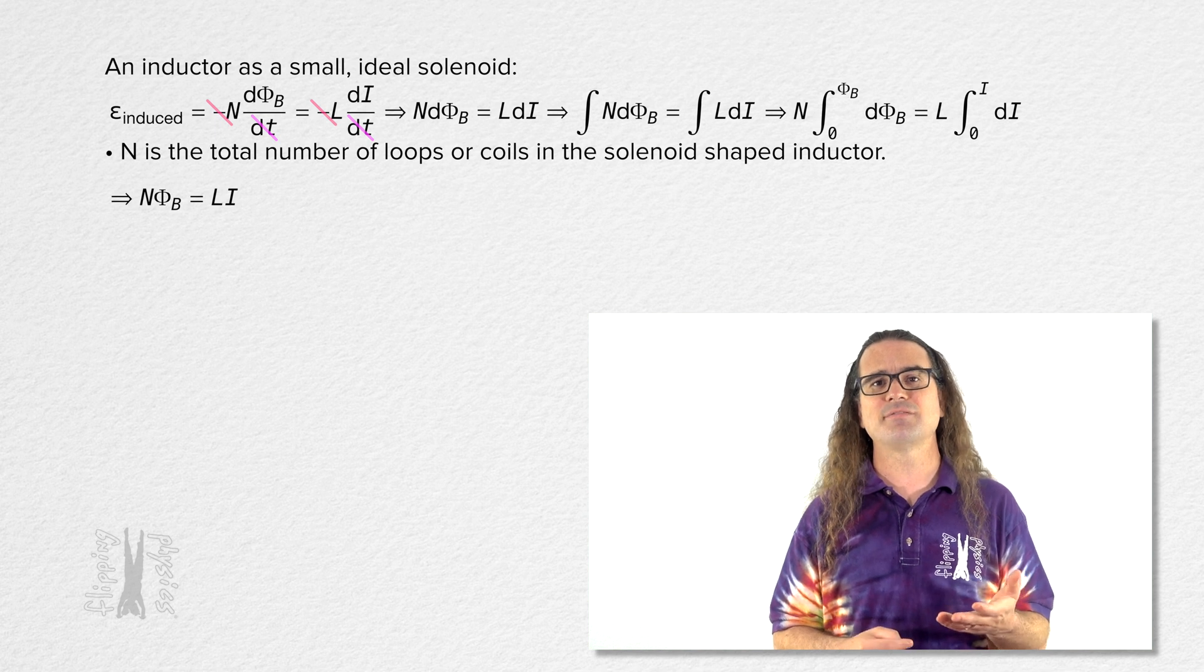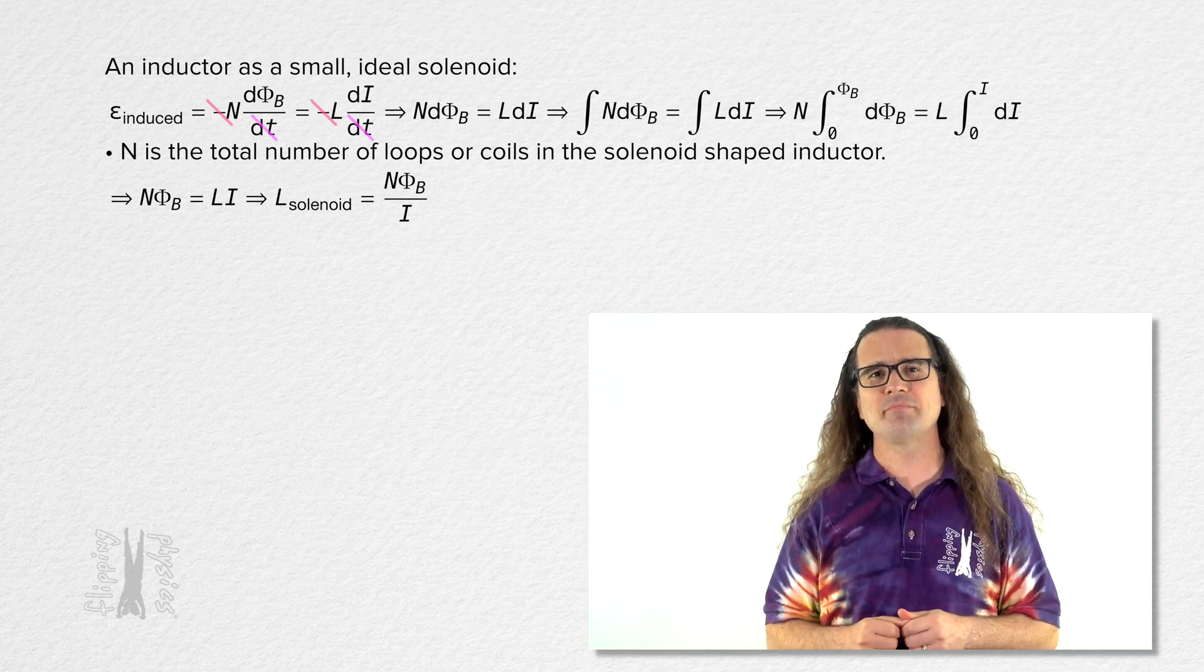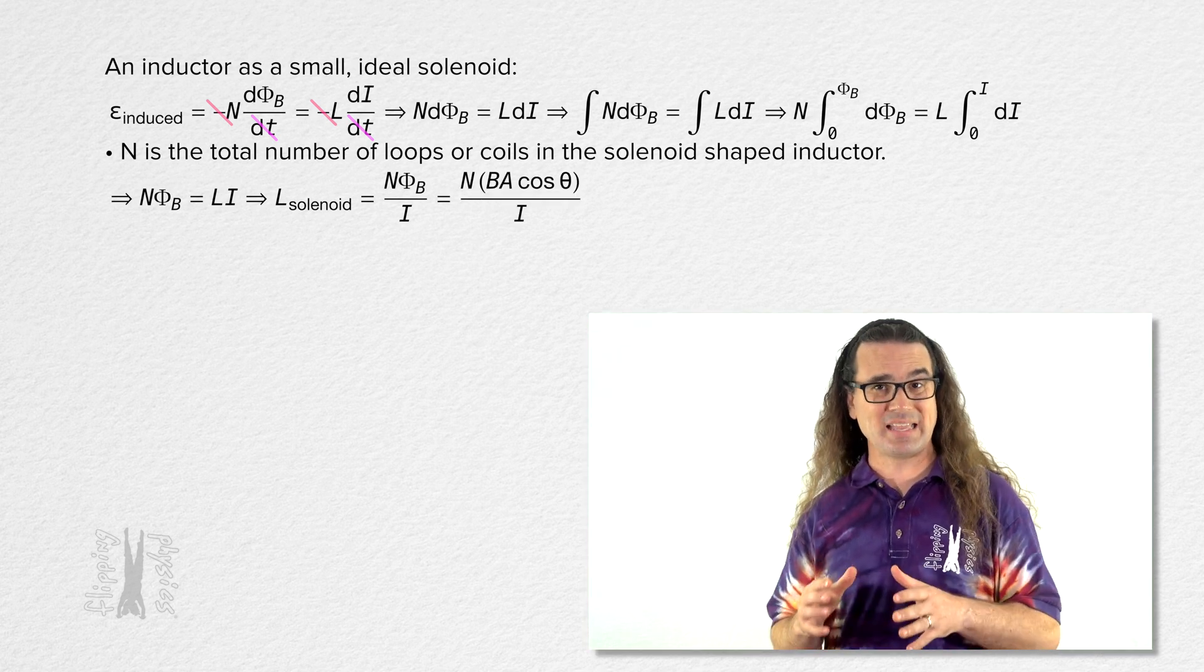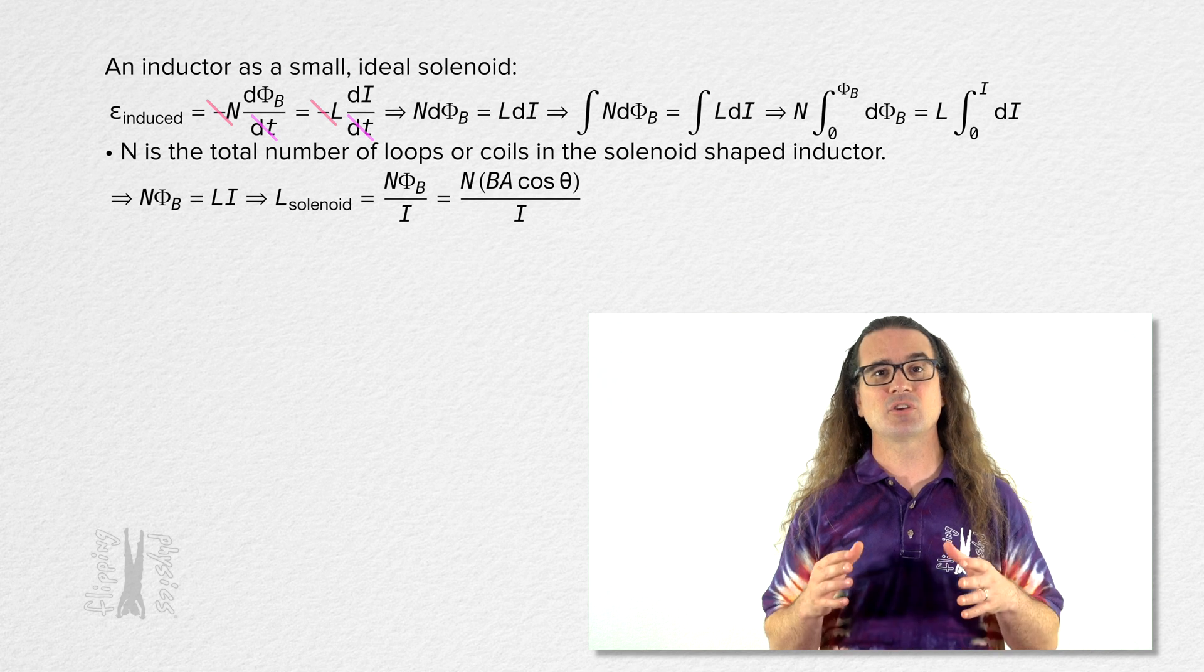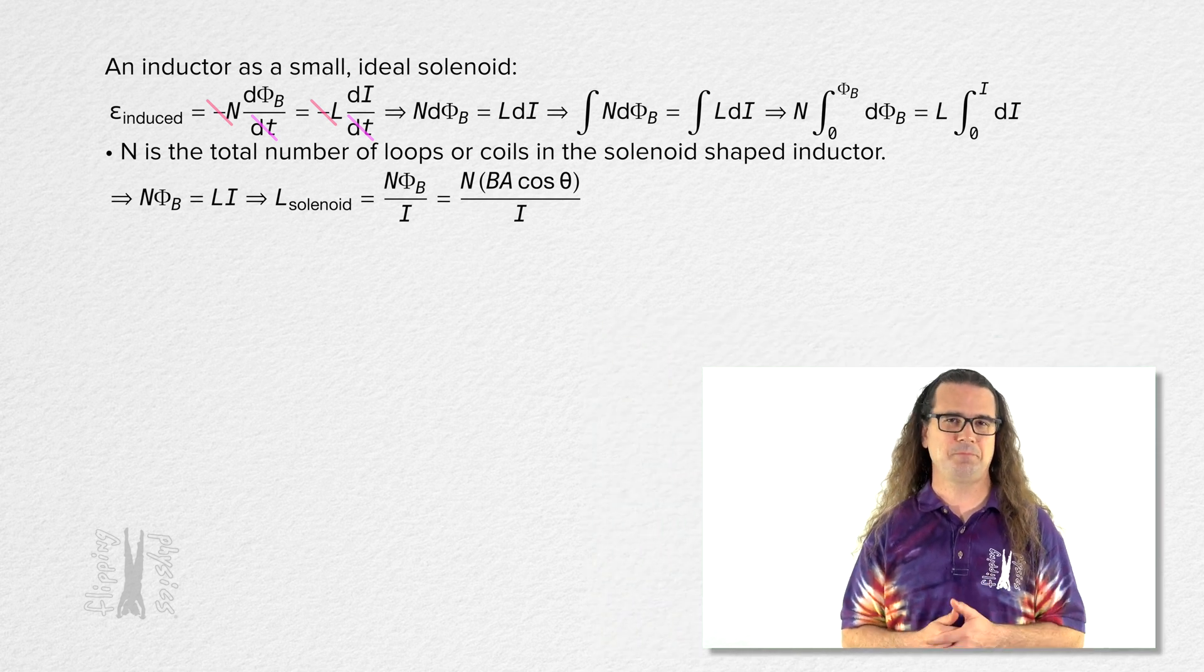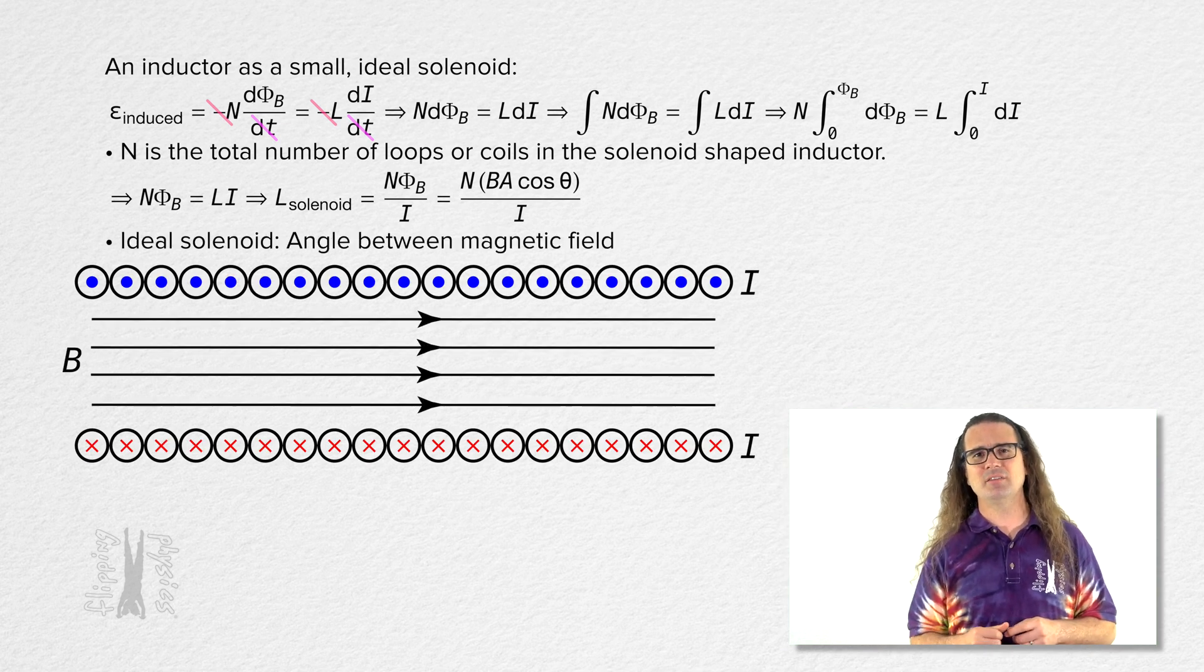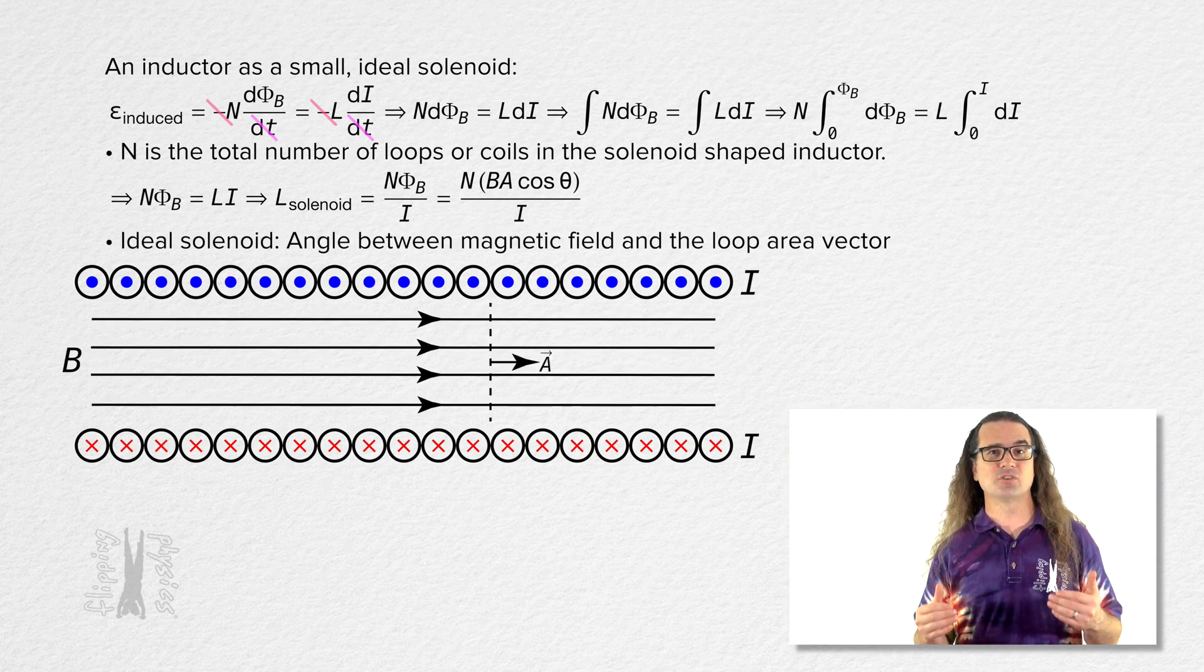We can solve that for the inductance of a solenoid. And we can substitute in the equation for the magnitude of magnetic flux, which equals magnetic field times loop area times the cosine of the angle between the direction of the magnetic field and the loop area. In an ideal solenoid, the angle between the magnetic field and the loop area vector is always zero degrees.